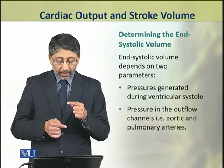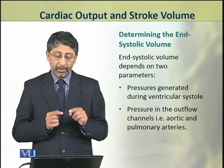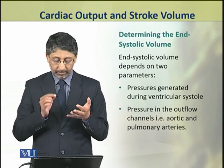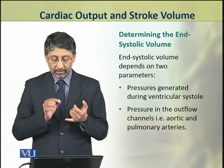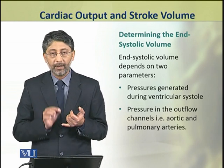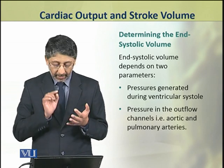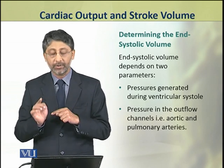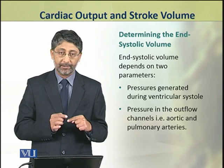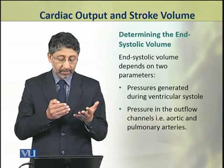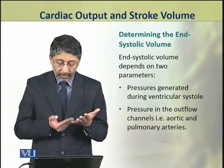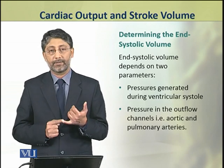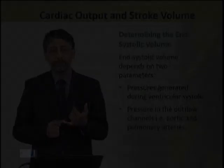The end systolic volume depends on two parameters: number one, the pressures generated during ventricular systole; and number two, the pressure in the outflow channels — that is, the aortic and pulmonary arteries.